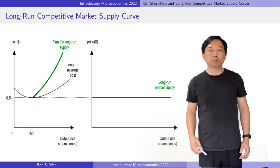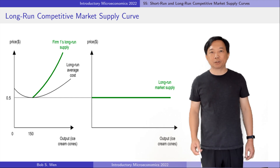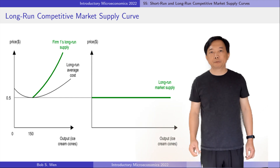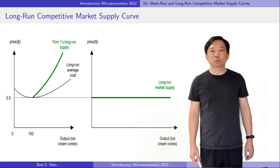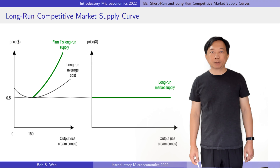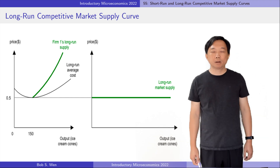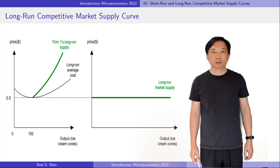On the other hand, if the ice cream firms in the market are making losses, then some existing firms will exit the market. Their exit will reduce the number of ice cream firms, decrease the quantity of ice cream cones in the market, and drive up the ice cream price and profit until firms that remain in the market are making zero economic profit. So in the long run, firms will enter or exit the market until profit is driven to zero. As a result, price equals the long run average total cost as shown in the graph. All the identical firms operate at the minimum of their long run average total cost. The long run competitive market supply is a horizontal line at the market price.